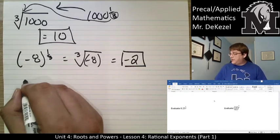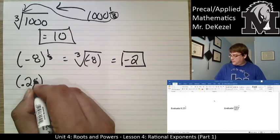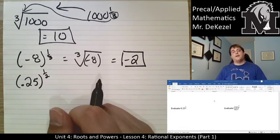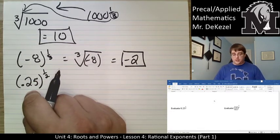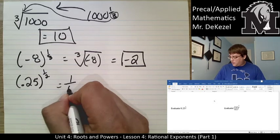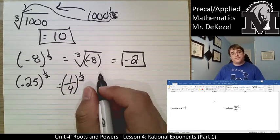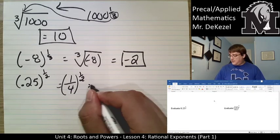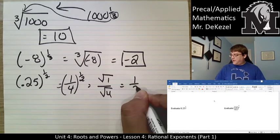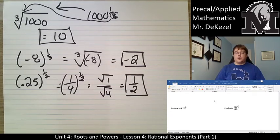We have 0.25 to the power of a half. I want to turn this into a fraction. I know that 0.25 is actually a quarter, so I can write this as one quarter to the power of a half. That's the square root of one over the square root of four, which is equal to one half. And if you were to try that out in your calculator, you would find that it was one half.